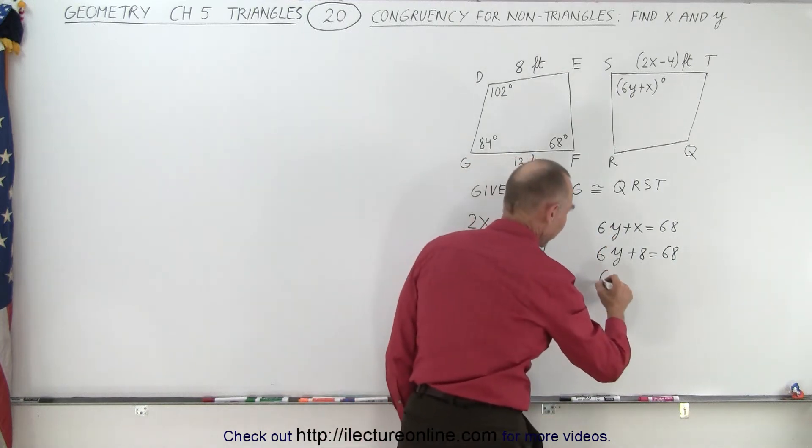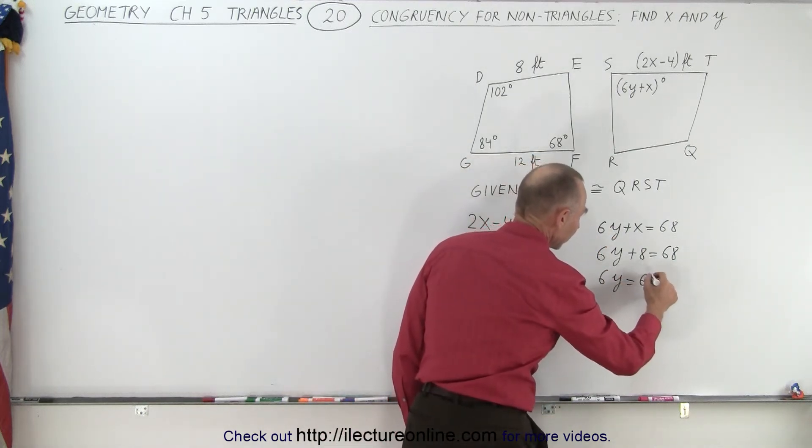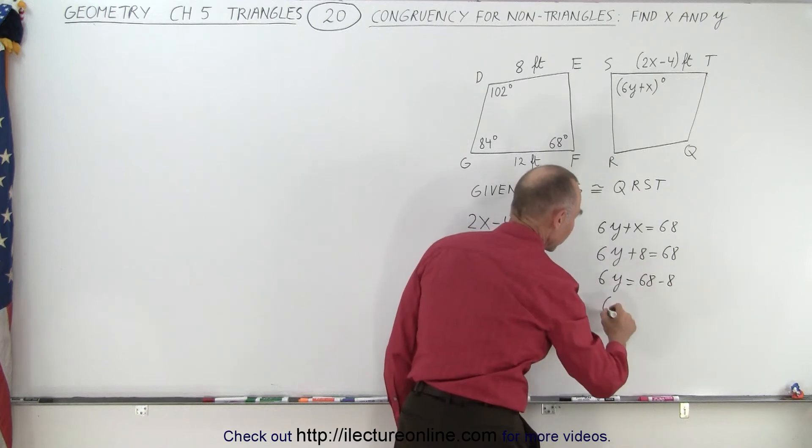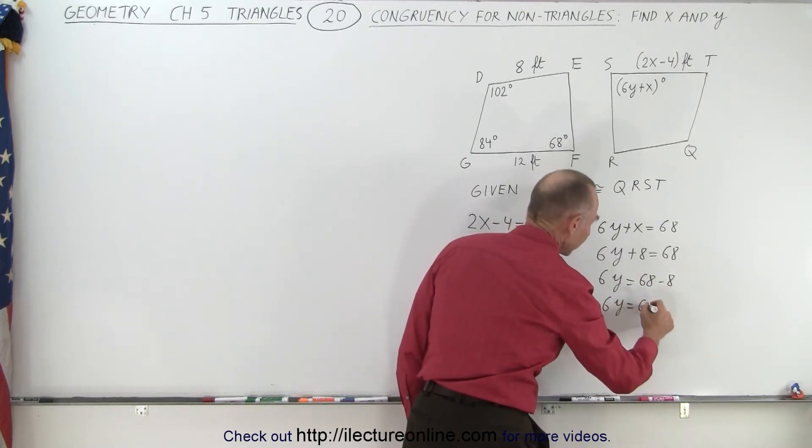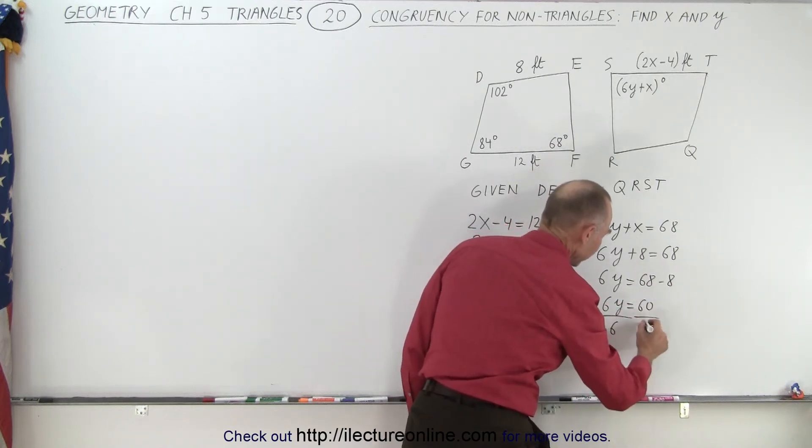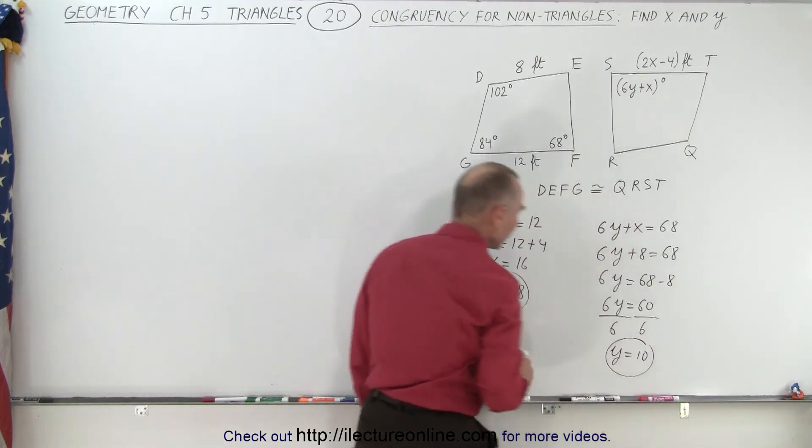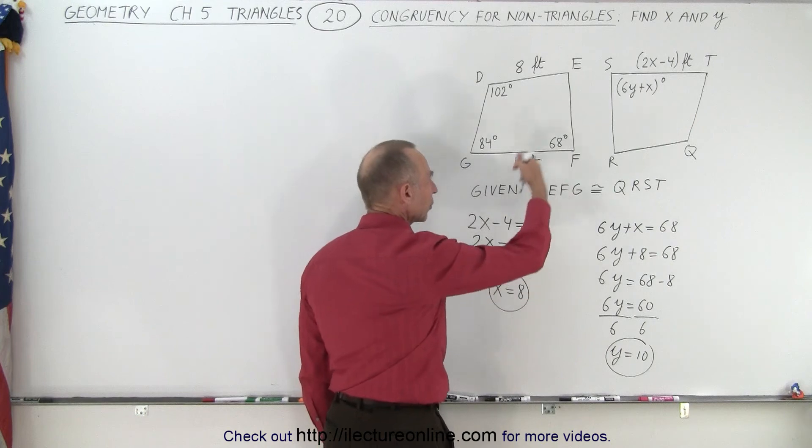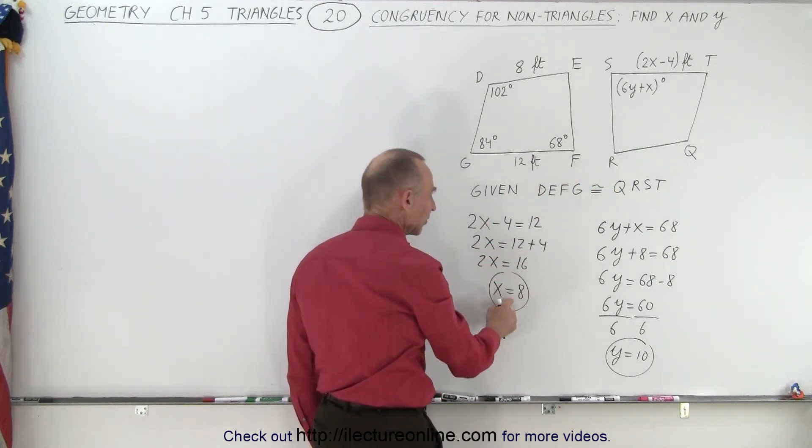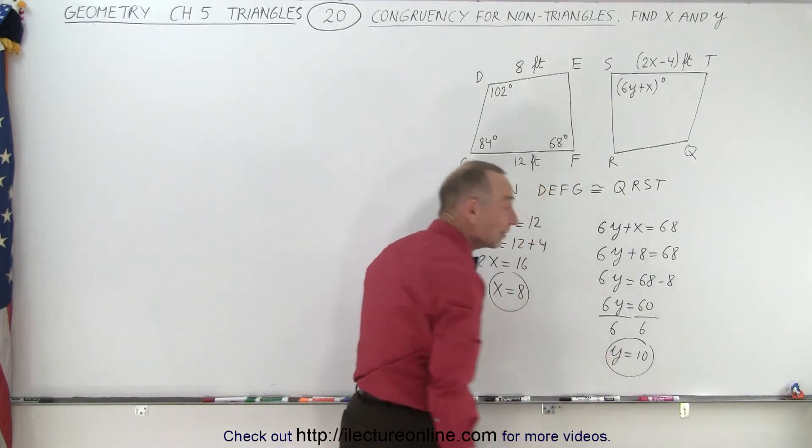We can now move the 8 across. So we have 6Y is equal to 68 minus 8, or 6Y is equal to 60. And dividing both sides by 6, we get Y is equal to 10. So here you can see that based on congruency, we can find that X is equal to 8 and Y is equal to 10.